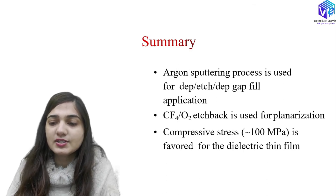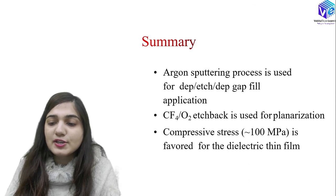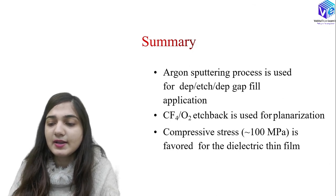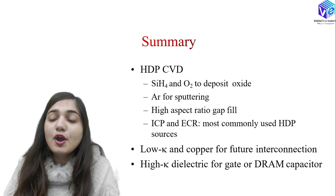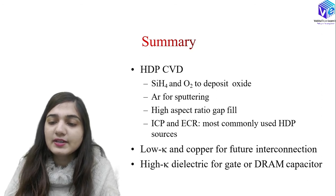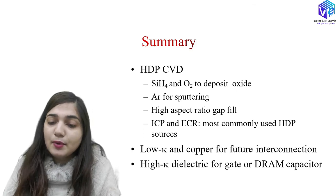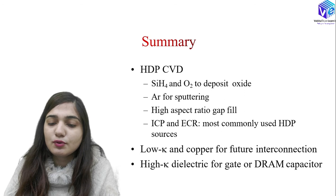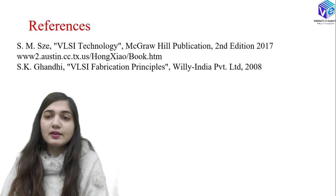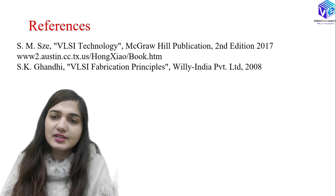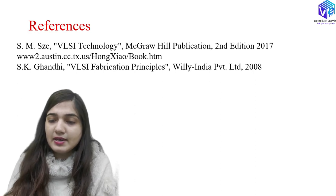Argon sputtering is used for deposition gap fill applications. CF4 and O2 HBEC is used for planarization. Compressive stress is favored for dielectric thin film, at approximately 100 MPa. For high density CVD, SiH4 and O2 are used to deposit oxide with argon for sputtering, and high aspect ratio gap fill is needed. ICP and ECR chambers are the most commonly used HDP sources. Going forward, low dielectric constant materials with copper are used for future interconnection, and high dielectric constant materials for gate and DRAM capacitors. These are the references for further reading on this topic.